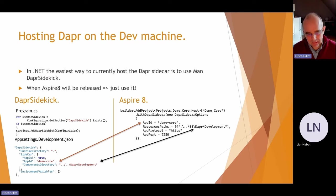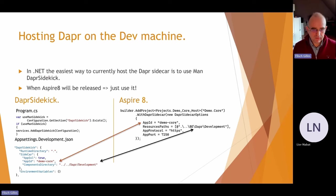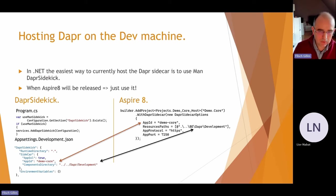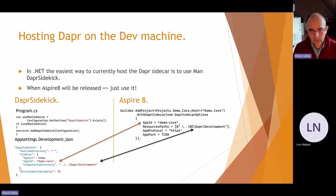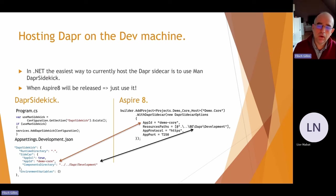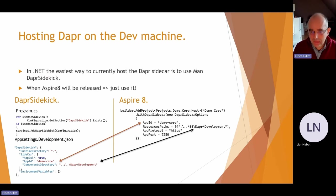In the generated code from the guidance tool, the components directory is linked to the development folder. All services defined in Aspire are linked to the same folder where all components are defined. This means the developer immediately faces the same Dapr configuration as in a Kubernetes deployment — a namespace with many declared components where scopes filter which components are used by which services.